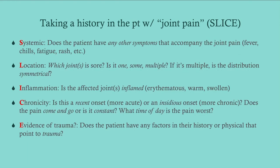I like this mnemonic — it's called SLICE. If you understand the S, L, I, C, and E of every possible cause of joint pain, you'll have a really good idea of your differential. S is for Systemic: does the patient have any other symptoms accompanying the joint pain? Do they have a malar rash? That would point to lupus. Do they have ulnar deviation? That points to RA. Do they have pain when they wake up and maybe a fever? That would point to an inflammatory cause. Or are they septic? That would point to septic arthritis.